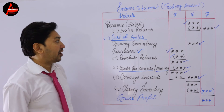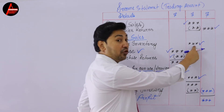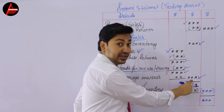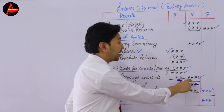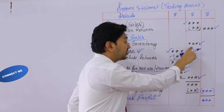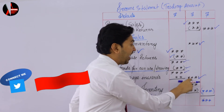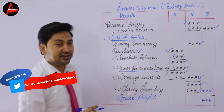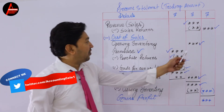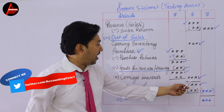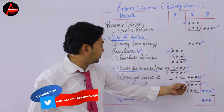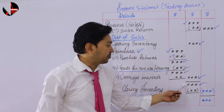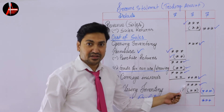Now look at the middle column — we already have opening inventory here. Now you have one more answer from the purchase calculations. These two amounts will be added together. Add opening inventory and the final answer of your purchase after all calculations, then get the answer and put it in the final column.